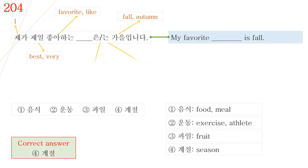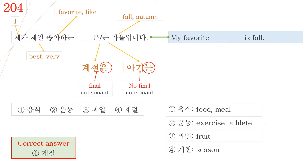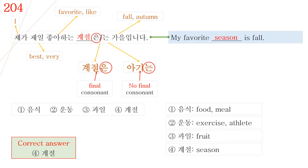One more checkpoint is the subject particle 은 or 는. If the final syllable has a final consonant, we use 은. If the final syllable has no final consonant, we use 는. So in the word 계절은, the syllable 절 has a final consonant, 리을, so we use 은. Let's read it again: 제가 제일 좋아하는 계절은 가을입니다. My favorite season is fall.